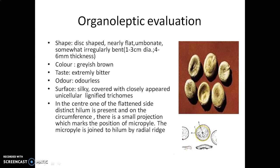In the center of the seed, one distinct hilum is present, and on the circumference there is a small projection indicating the position of the micropyle. The micropyle is joined to the hilum by a radial ridge, as you can see here.